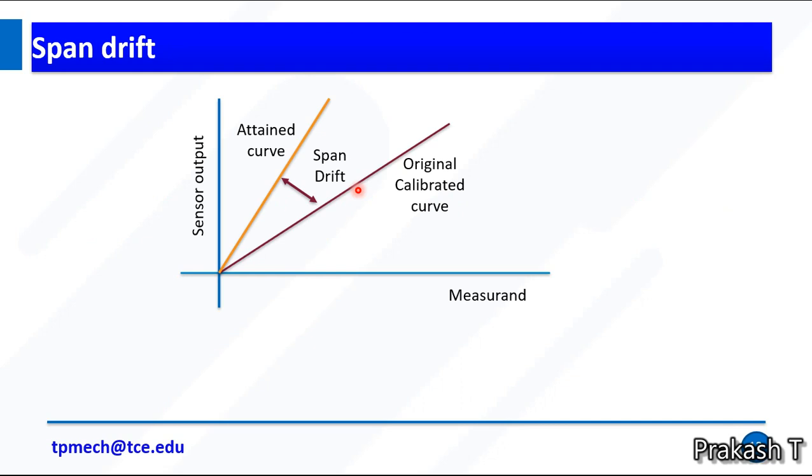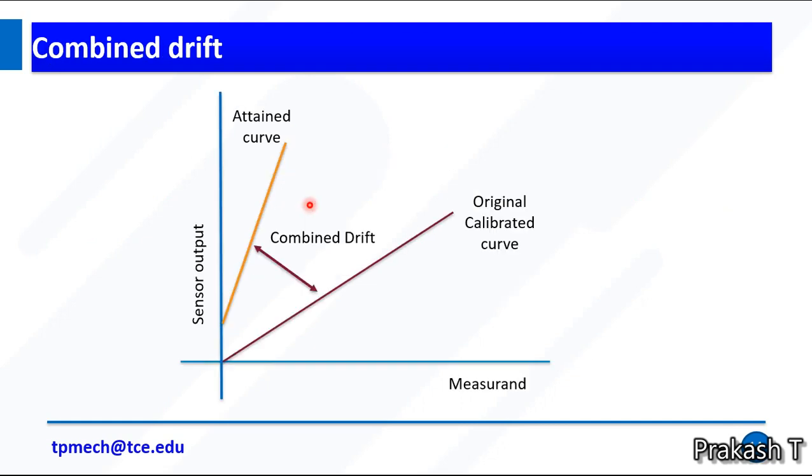The second drift is span drift. Here the attained curve and original calibrated curve have different variations. Combined drift combines the zero drift and span drift. This is a combined curve.